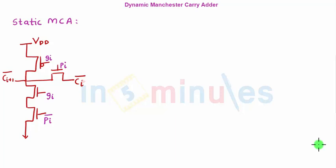In the previous clip we already saw a static Manchester carry adder. The circuit is present on the screen, where we saw different cases and identified that just by using generate and propagate signals we could easily get the Cout functionality. The pull-up used a PMOS to produce a perfect 1 at the output, while the pull-down had series NMOS transistors producing a 0. I connected a PMOS in the pull-up with input GI, and the pull-down comprised two NMOS transistors — one with input GI and another with input PI bar — plus a pass transistor with gate input SPI passing CI bar.